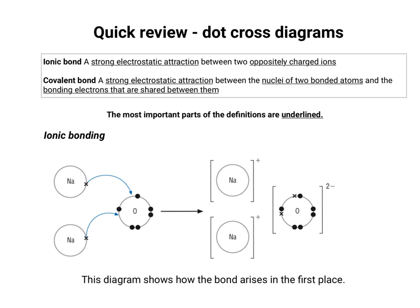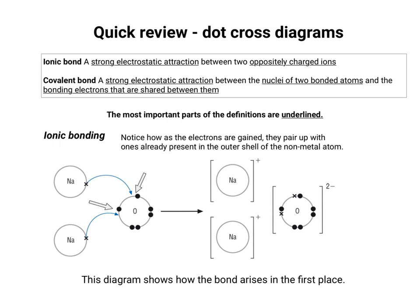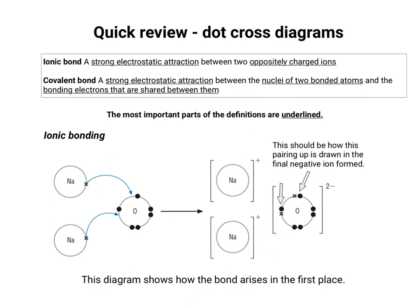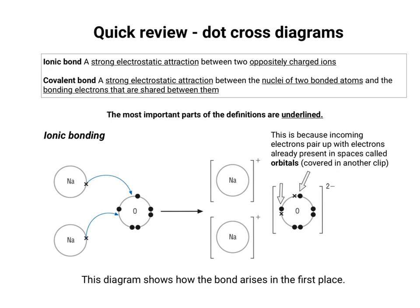This diagram shows how the bond in an ionic bond arises in the first place. The metal — in this case sodium — loses one or more electrons from its outer shell, whilst the non-metal gains one or more electrons in its outer shell. The electrons are gained by the non-metal atom — the oxygen in this case — and they pair up with ones that are already present in the outer shell of the non-metal atom. These electrons are in spaces called orbitals; all electrons occupy spaces in shells called orbitals.